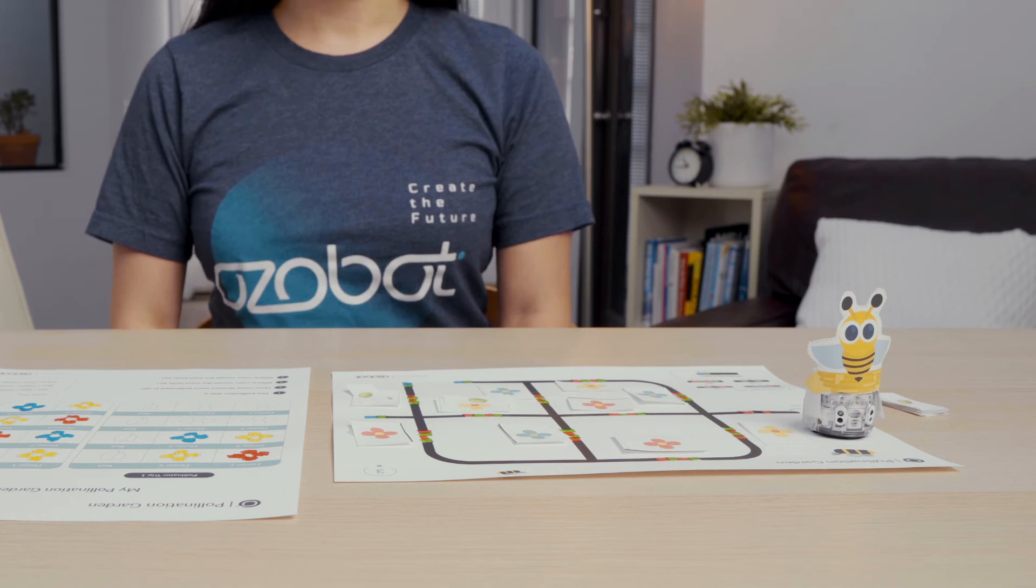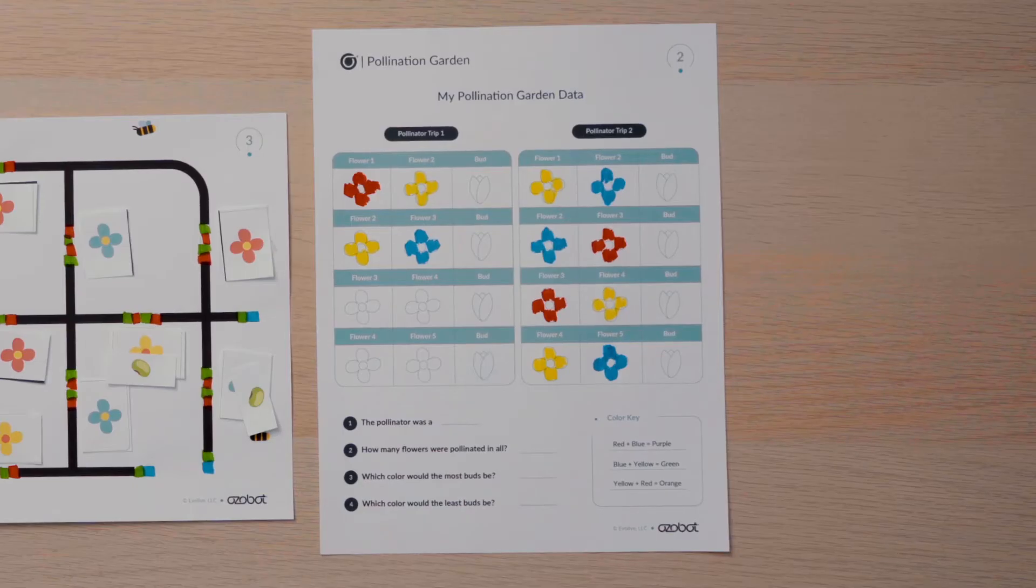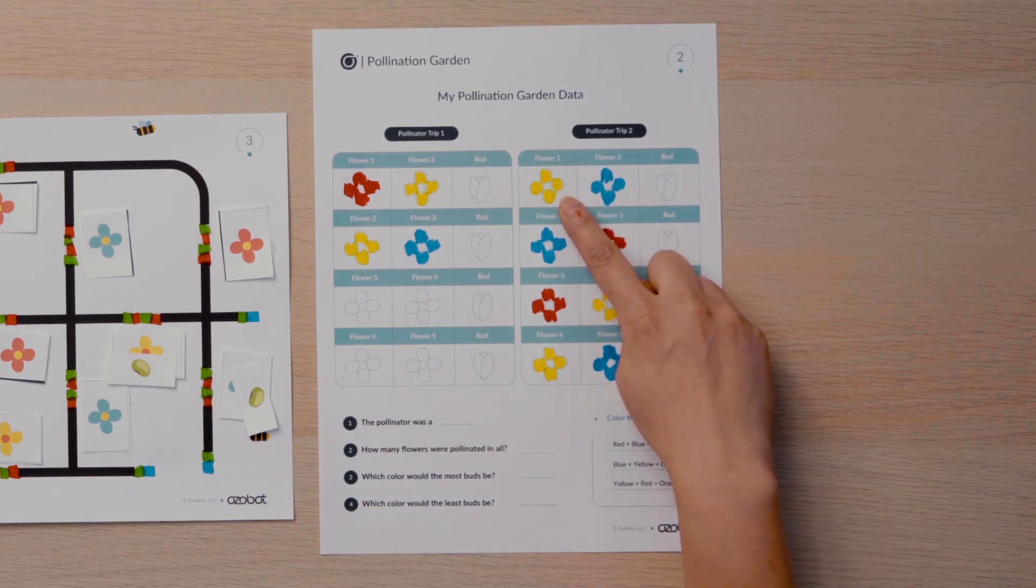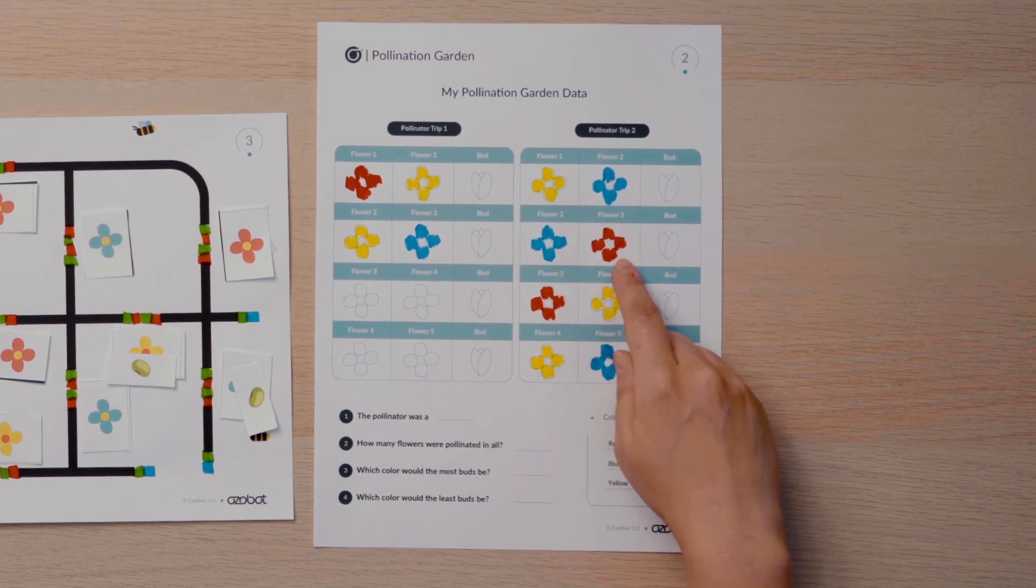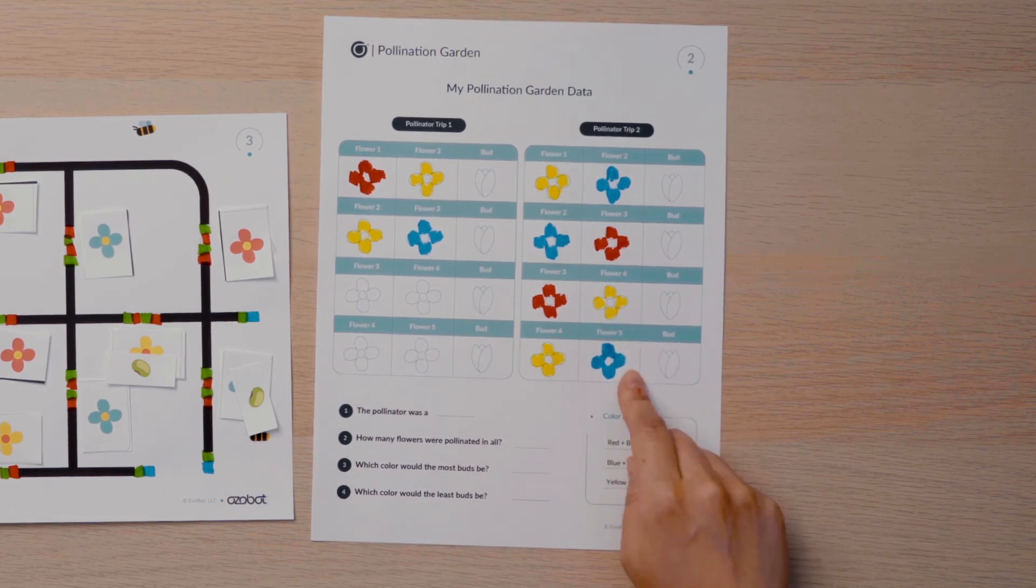During trip two, my bee moved in a different sequence. You can see in my data, my bot went first to a yellow flower, then to a blue flower, then to a red flower, then to a yellow flower, followed by a blue flower.